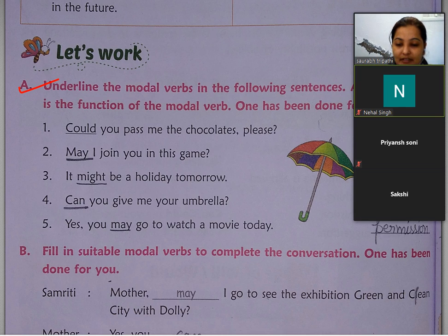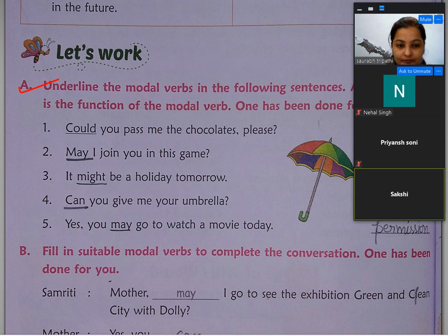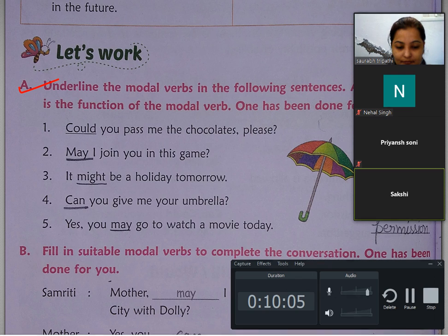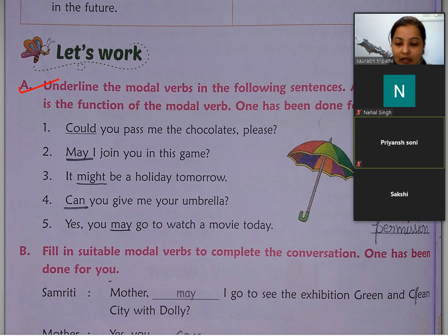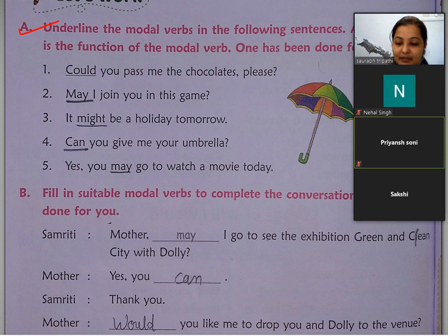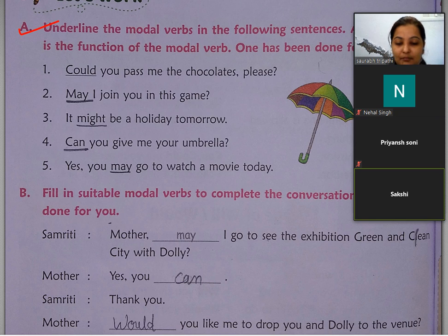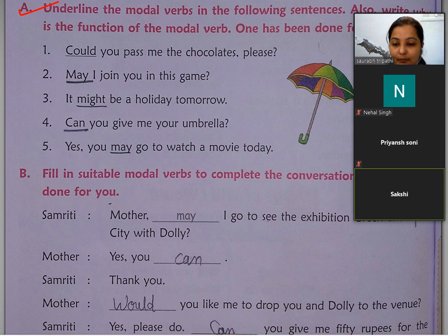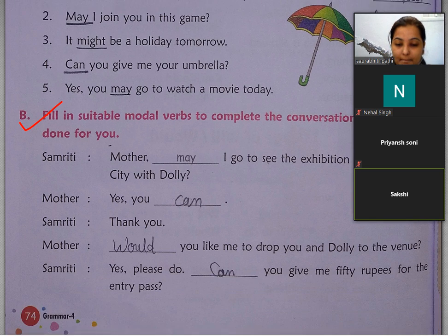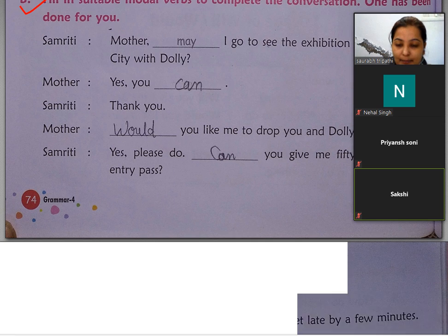Next exercise: Fill in suitable modal verbs to complete the conversation — one has been done for you। यहाँ पर इस्मृति और उसकी mother का conversation है। इसमें may, might, can, will, would सबका use हुआ है। यह भी आपको book में ही fill करना है।